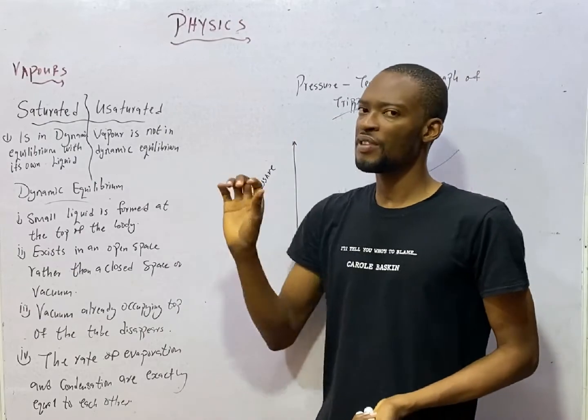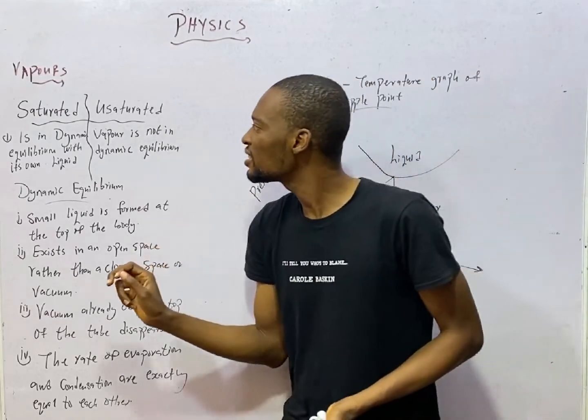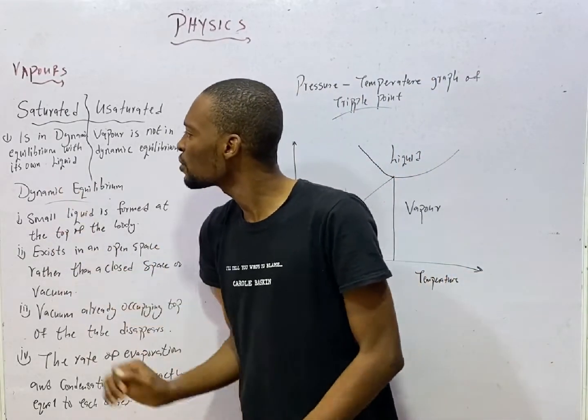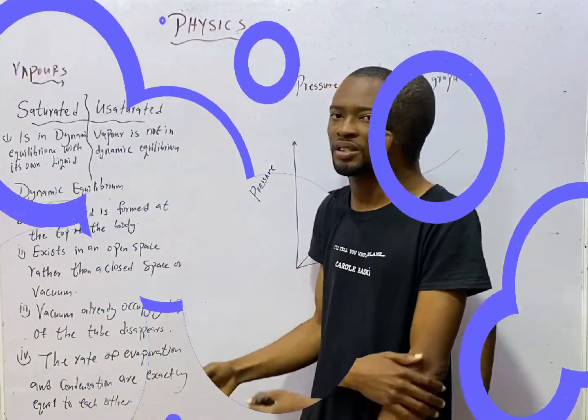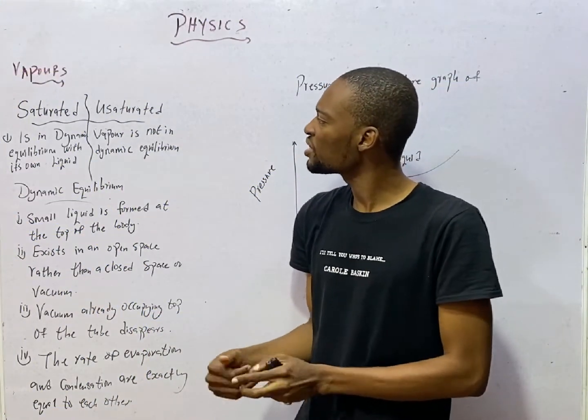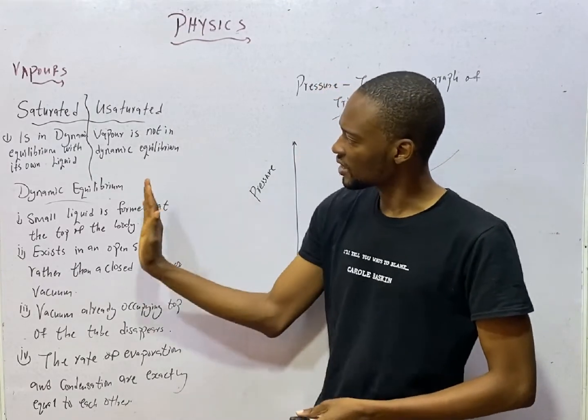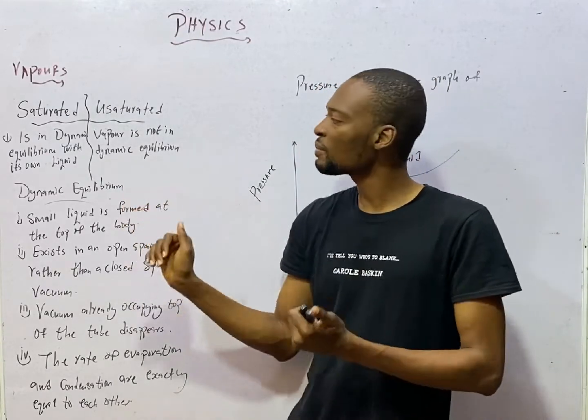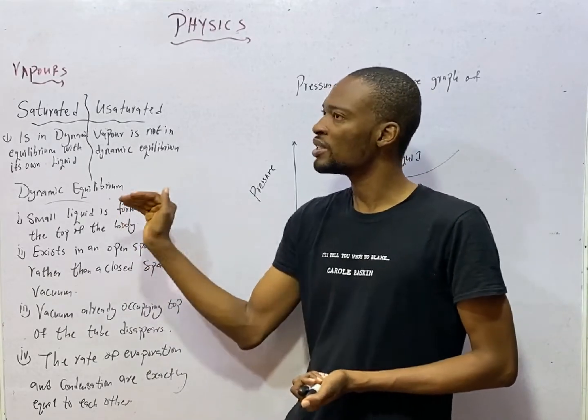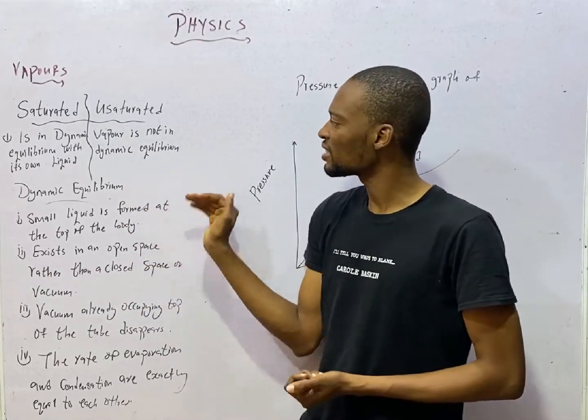Meanwhile, for unsaturated vapor, the amount of molecules leaving are more than the ones coming back because we need more molecules to saturate the air. The saturated vapor is in dynamic equilibrium with its own liquid. Meanwhile, the unsaturated vapor is not in equilibrium with the liquid.